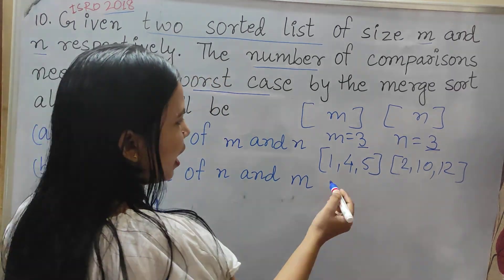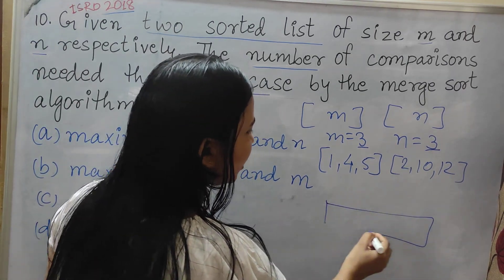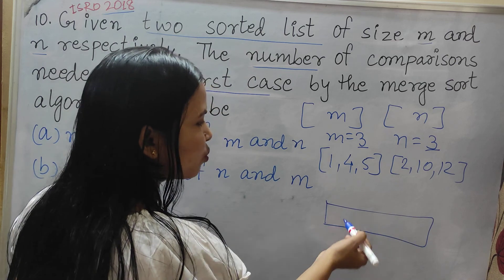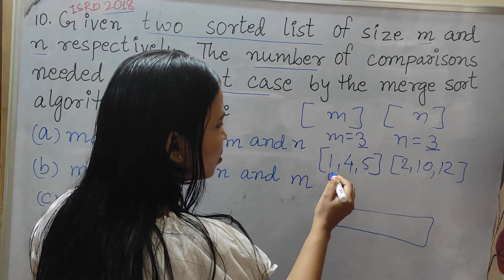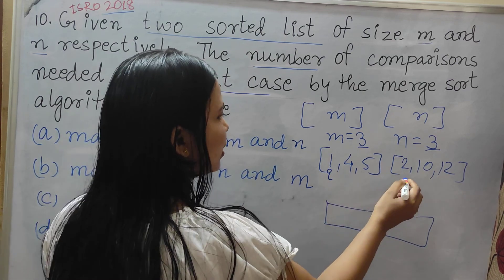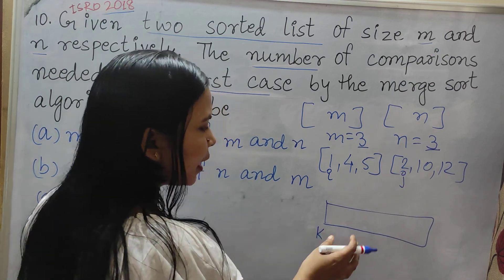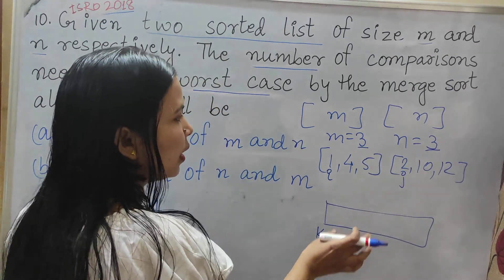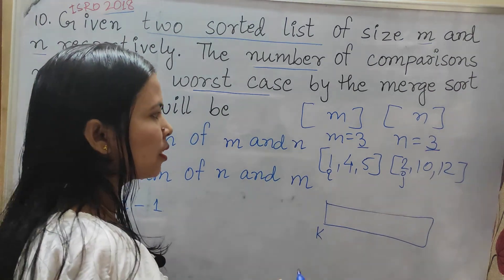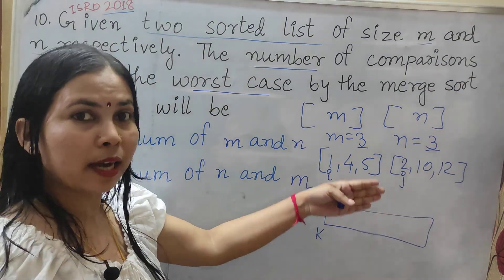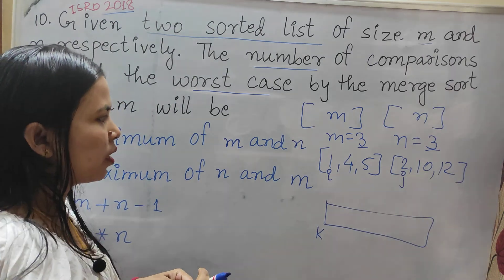These are the two arrays. Whenever we are comparing and sorting, we use 3 pointers: I, J, and K. The K pointer is used to store the data which is in the lesser part. Through comparisons we will store whichever element is lesser.